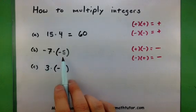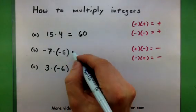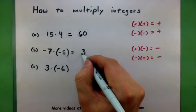Here I have a negative 7 multiplied by a negative 5. The first thing I'm going to do is multiply 7 and 5 together. This will give me a 35.